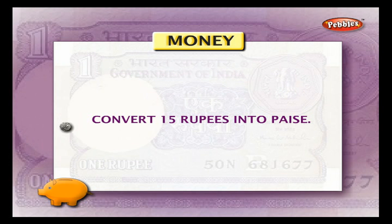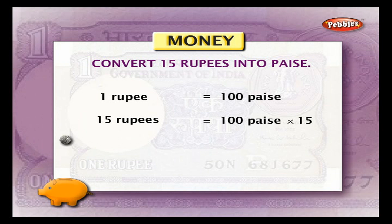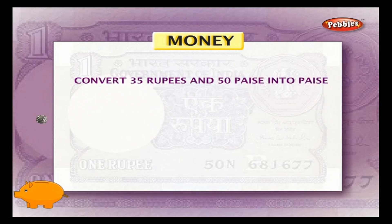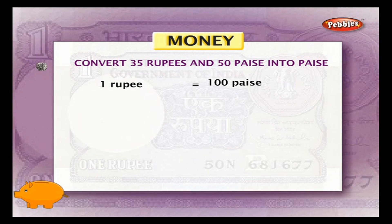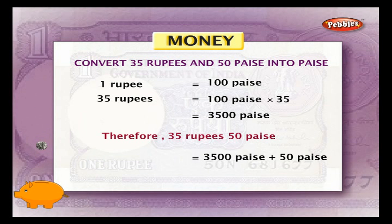Convert 15 rupees into paisa. One rupee is equal to 100 paisa, so 15 rupees is equal to 100 paisa into 15, which is equal to 1500 paisa. Example 2: convert 35 rupees and 50 paisa into paisa. 35 rupees is equal to 100 paisa into 35, which is equal to 3500 paisa. Therefore, 35 rupees and 50 paisa is equal to 3500 paisa plus 50 paisa, which is equal to 3550 paisa.